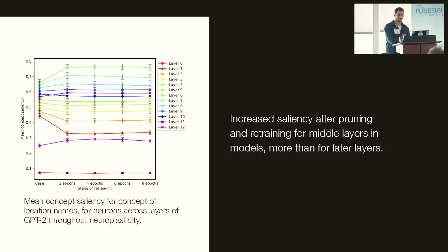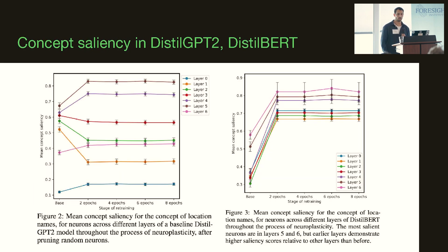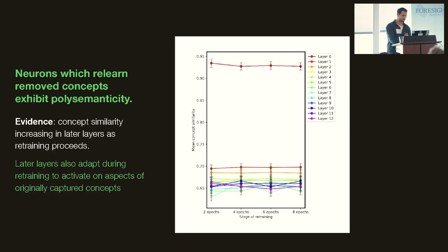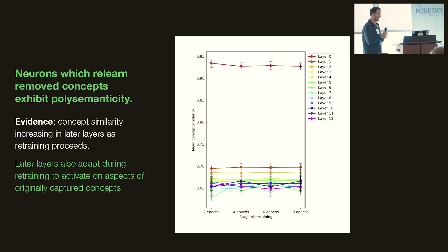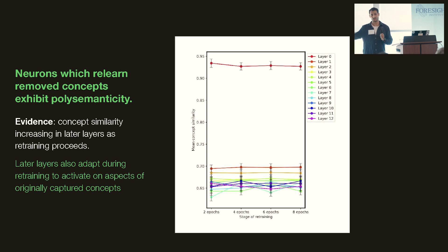We also show that if you don't prune significantly salient neurons, you don't get a good representation of how relearning might appear. The neurons able to recapture the distribution of pruned concepts are primed for relearning. The neuron that now represents the concept of a location name that was pruned is captured by a neuron that initially represented people's names or some other adjective names.